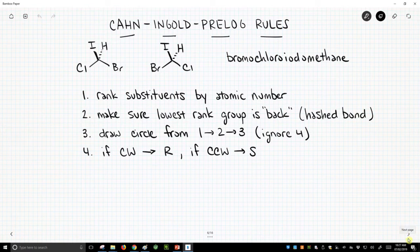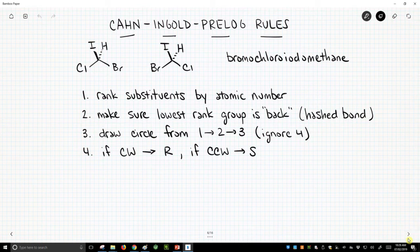And the way we address this issue is through something called the Cahn-Ingold-Prelog rules. Sometimes people just say CIP rules.